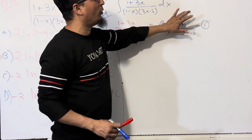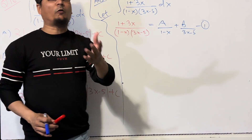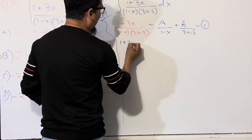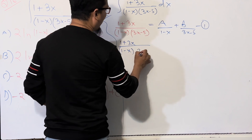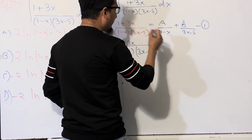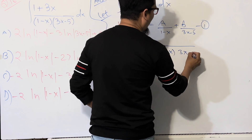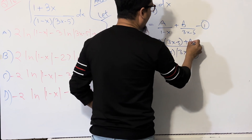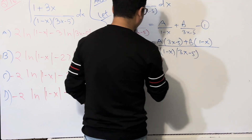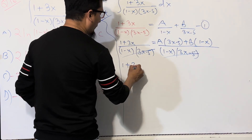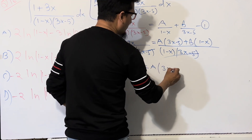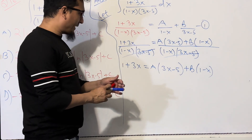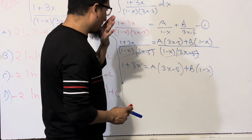We don't know the values of A and B yet — we will find them. Take the LCM on the right side: (1 + 3x) / [(1 - x)(3x - 5)] = [A(3x - 5) + B(1 - x)] / [(1 - x)(3x - 5)]. The denominators cancel, giving us: 1 + 3x = A(3x - 5) + B(1 - x).